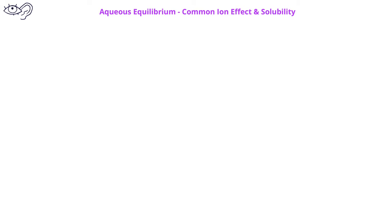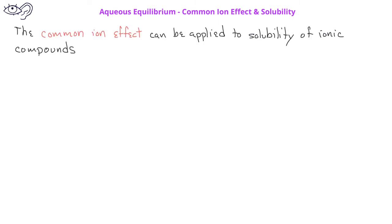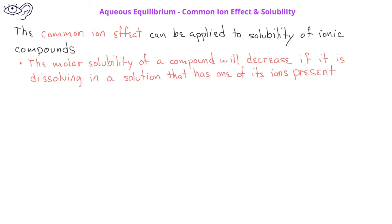In previous videos, we learned about the common ion effect. The common ion effect can be applied to solubility equilibrium as well. If a solution has one of its ions present in a compound, the molar solubility of that compound will be less than the molar solubility of that compound in pure water.